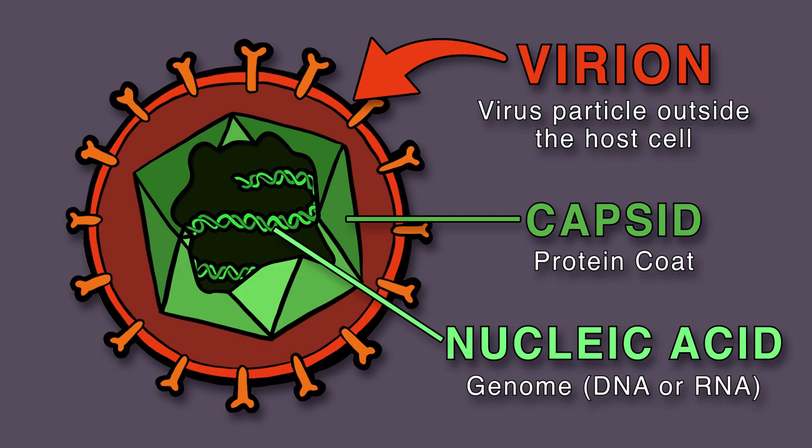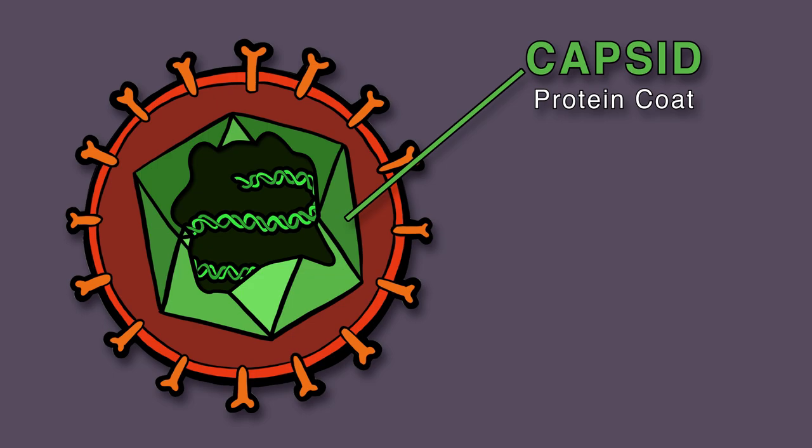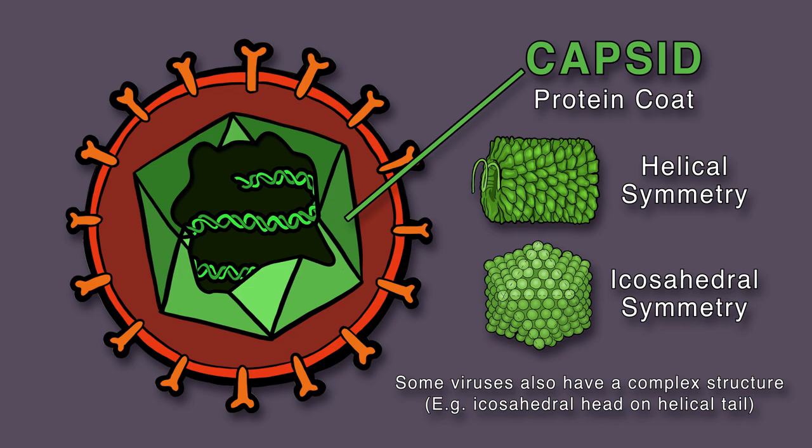Outside the cell are virions with protein coats or capsids, which have nucleic acid in their interiors. The capsid is made up of proteins arranged in a neat array, with helical or icosahedral symmetry displayed.